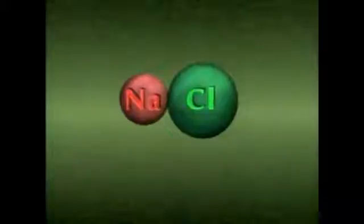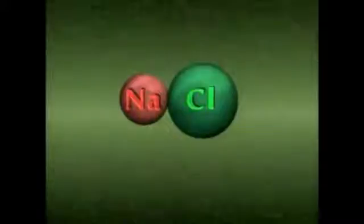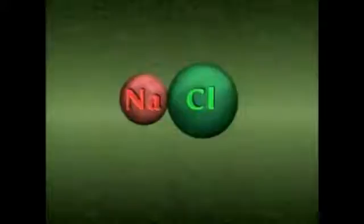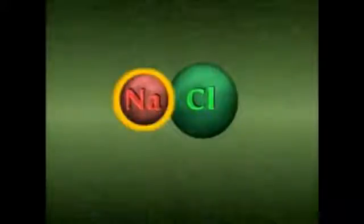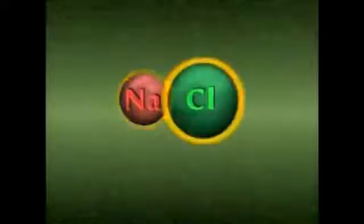When atoms combine with other atoms, they form molecules. A molecule is the smallest particle of a substance that retains all the properties of that substance. For example, one molecule of common table salt has all the properties of salt. A salt molecule contains one atom of sodium, Na, and one atom of chlorine, Cl.